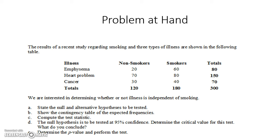This is a problem where we have two categorical variables: smoking and illness. The results of a recent study regarding smoking and three types of illness are shown in the following table. 300 people have been categorized into smokers and non-smokers — 120 are non-smokers and 180 are smokers. Out of 300 people, those suffering from emphysema is 80, heart problem is 150, and cancer is 70.